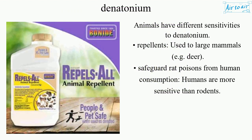Animals have different sensitivities to denatonium repellents. It is used with large mammals such as deer to safeguard rat poisons from human consumption. Humans are more sensitive to denatonium than rodents.